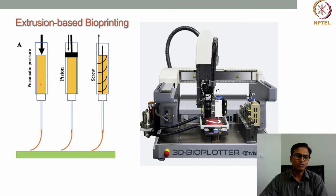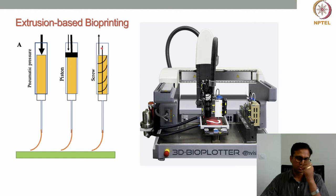The syringe is attached to the bioprinter and filled with material — for example, a polymeric material shown in yellow. The nozzle is attached to the syringe, and when we push the material it comes out through the nozzle as a filament. Pressure can be applied by pneumatic air, by a piston (mechanical pressure), or by a screw — when the screw rotates based on its threading, it pushes the material forward and it comes out through the syringe as a filament, which is then deposited on the build platform.